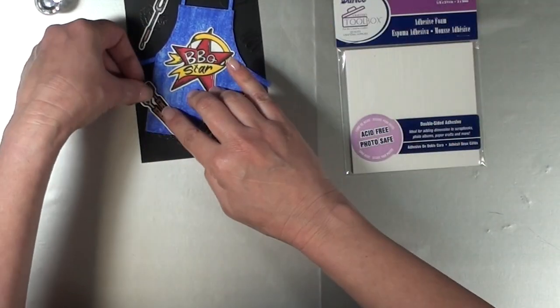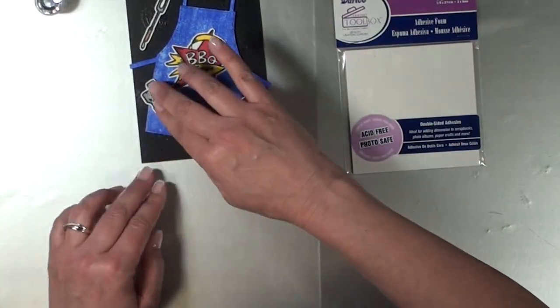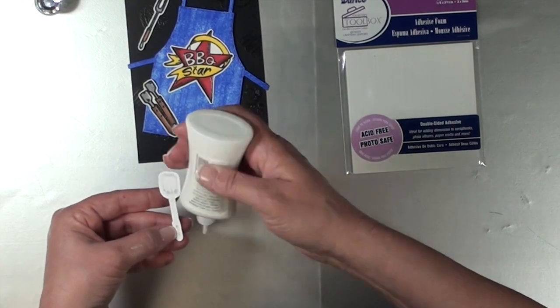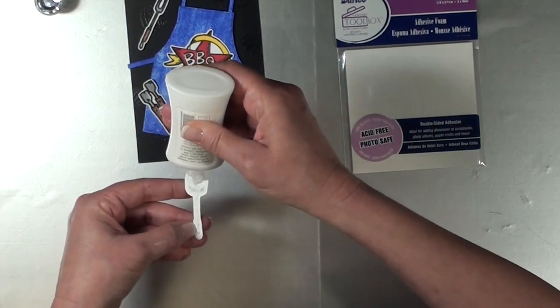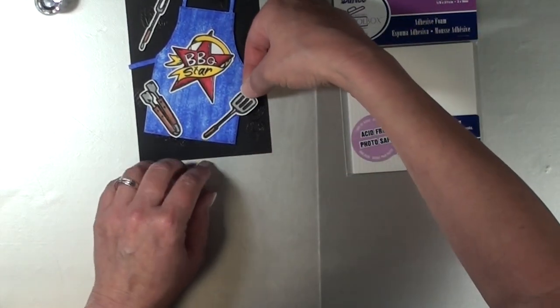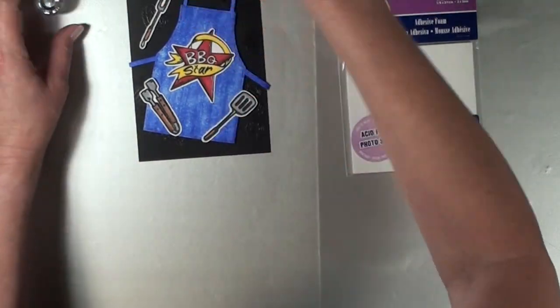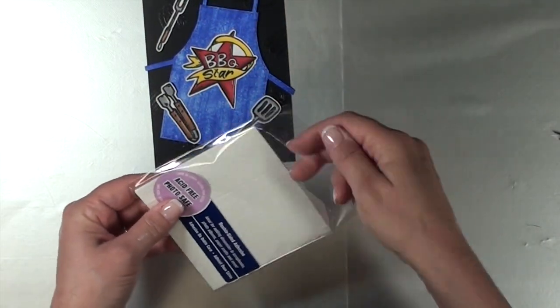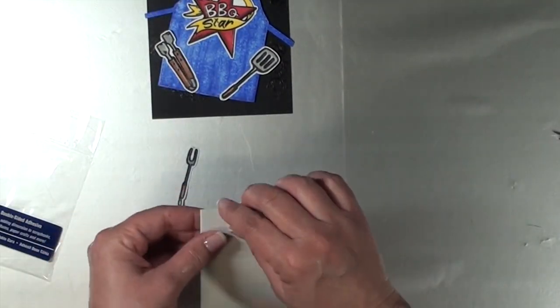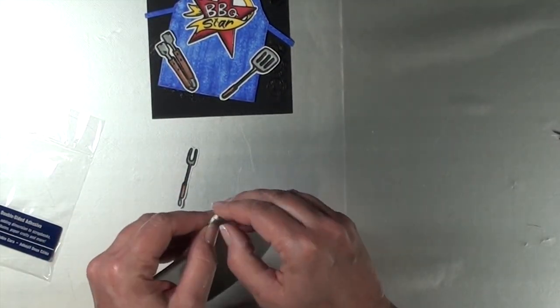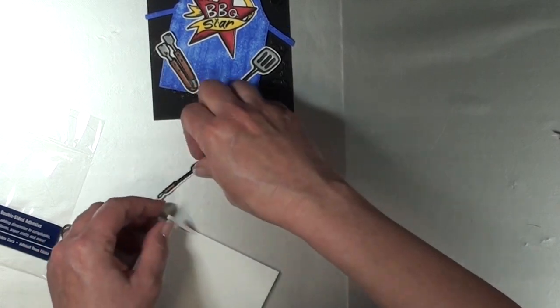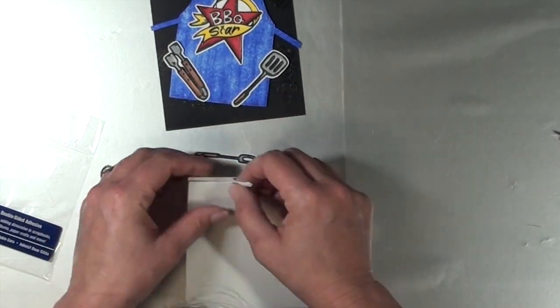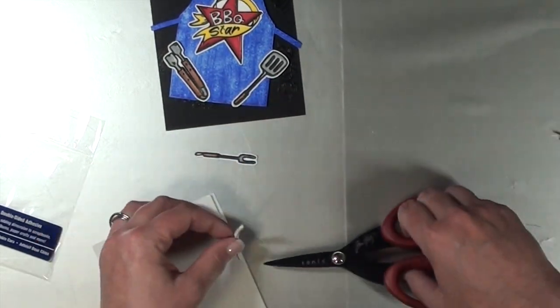I am gluing down the tongs and the spatula and I wanted the meat fork that's going to be up at the top to be popped up. I decided this would be the perfect opportunity to try something new to me. These Darice thin foam strips are just the perfect thing. They weren't too thick to go with this fork, this meat fork, which is actually pretty thin as far as die cuts go.